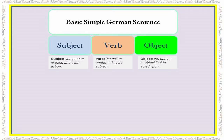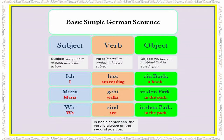A basic simple German sentence has three parts: a subject, a verb, and an object. The subject is the person or thing doing the action, the verb is the action performed by the subject, and the object is the person or thing acted upon. The first sentence is 'ich lese ein Buch', meaning 'I am reading a book'. The second sentence is 'Maria geht in den Park' — Maria walks in the park.